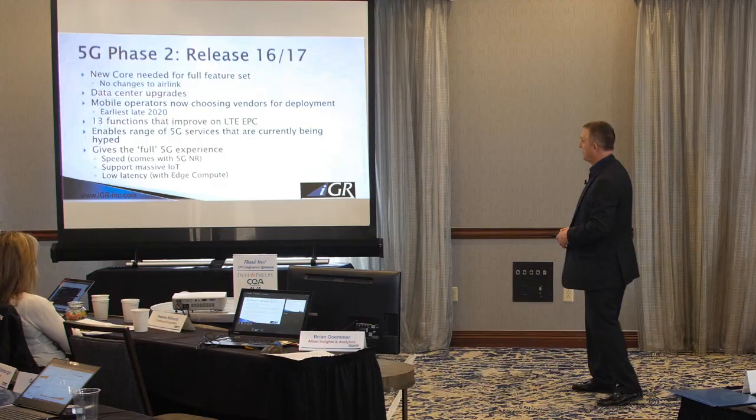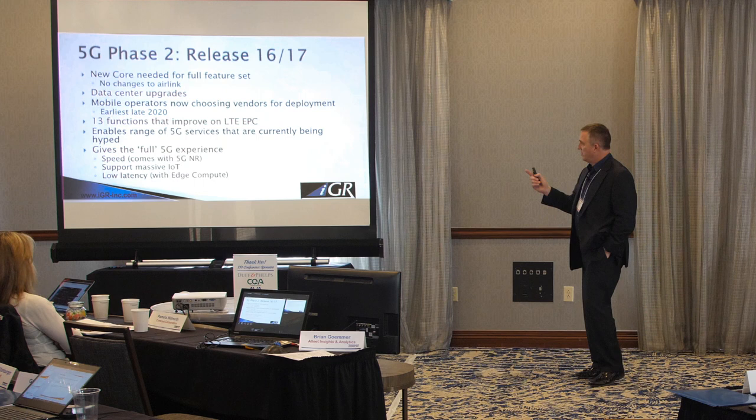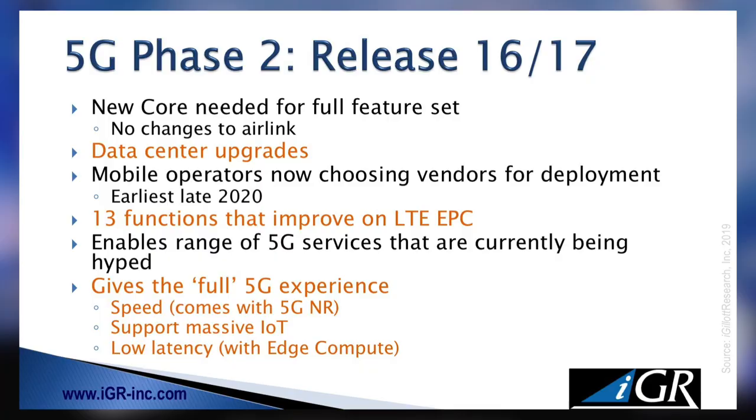Earliest deployment is late 2020, could easily slip into 2021. There are 13 functions in the new core. I had a conversation with AT&T's CTO about how many vendors — he said he could have 13, but he probably won't do that to himself. They'll end up with two or three, but if one vendor is really good at function number nine, they'll use them for that. It's very specific. This gives you all those 5G services — speed, IoT, and low latency. But Phase 2 is really more around the back-end architecture of 5G versus the towers, radios, and antennas.